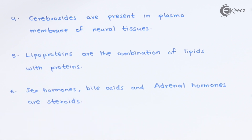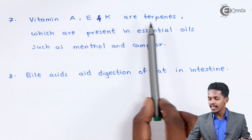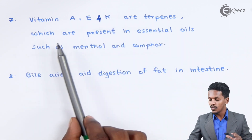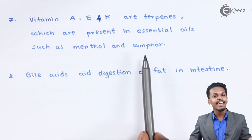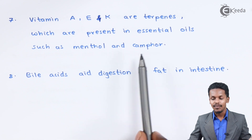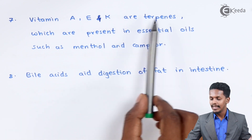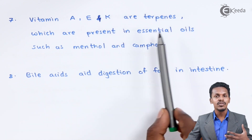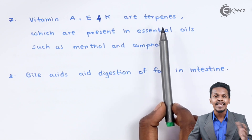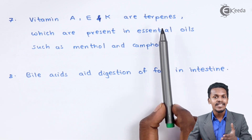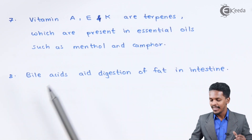Vitamins A, E, and K are terpenes, which are present in essential oils such as menthol and camphor. Terpenes come under the classification of lipids — specifically simple lipids.